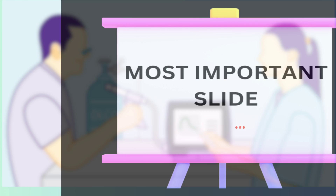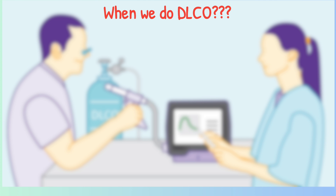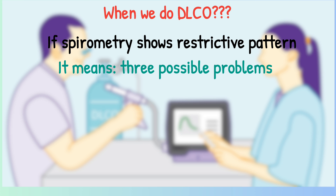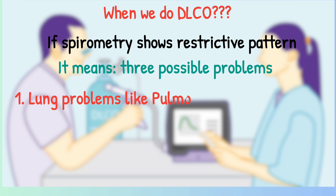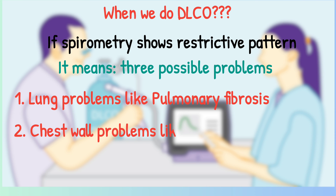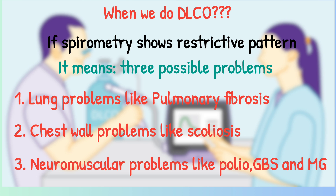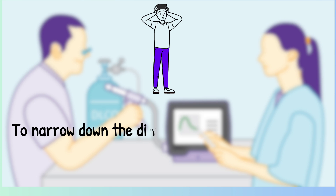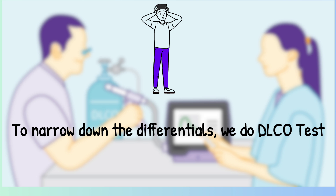The most important concept: when we do a DLCO test, if spirometry shows a restrictive pattern, there are three possible causes. Number one is lung problems like pulmonary fibrosis. Number two is chest wall problems like scoliosis. Number three is neuromuscular problems like polio, Guillain-Barré syndrome, and myasthenia gravis. To narrow down these differentials, we do the DLCO test.